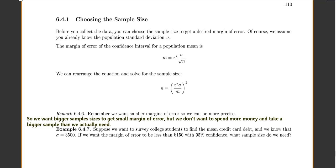In our next example, suppose we want to survey college students to find the mean credit card debt. And we know that our population standard deviation is 3,500. If we want the margin of error to be less than 150, let's write down what we're told. Standard deviation equals 3,500. We want our margin of error to be less than 150. We want 95% confidence level. What sample size do we need?